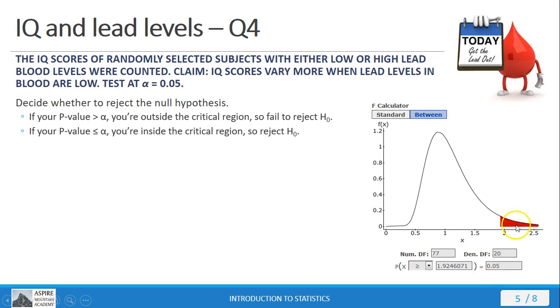5% is the area of that tail. And so the boundary for that comes out to be 1.92. So 1.92 is that critical value. It's the boundary for our critical region or region of rejection.